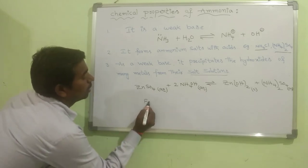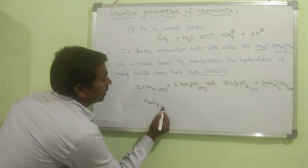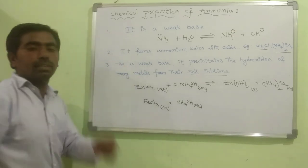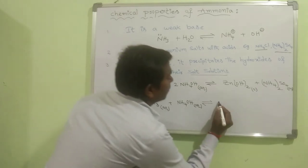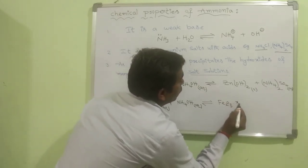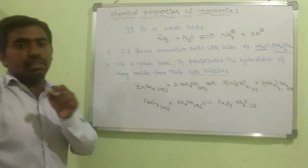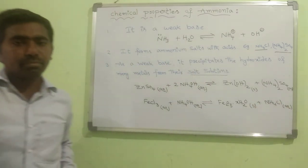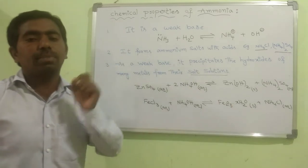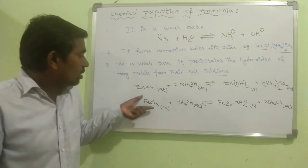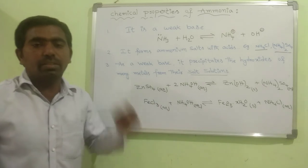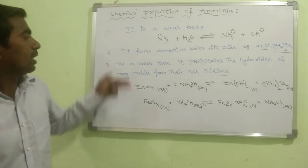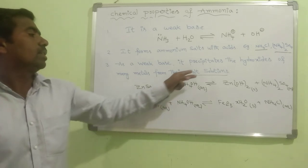Another example: FeCl₃, ferric chloride, in aqueous medium. To this, I am adding ammonium hydroxide, also in aqueous medium. Both react with each other to form hydrated ferric oxide in the solid state, along with ammonium chloride in aqueous medium. Here also, the hydrated oxide is obtained as a precipitate when a salt solution of a metal reacts with ammonium hydroxide. This is about the chemical reaction between ammonia solution and the salt solution of a metal.